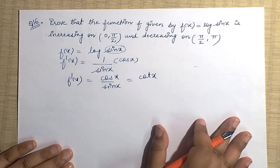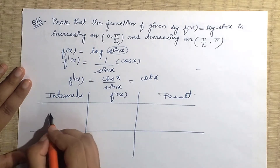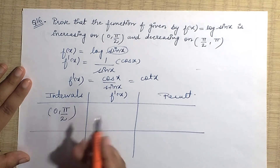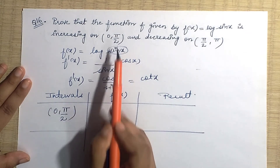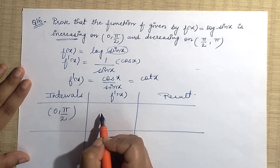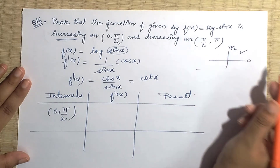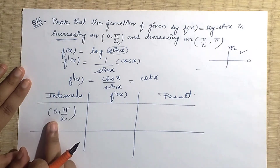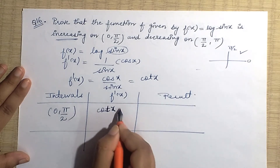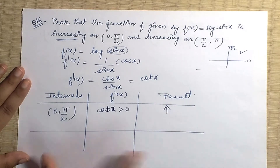So f'(x) = cot x. Now let's generate the intervals. The first interval is (0, π/2). In this interval, the function should be increasing. Any trigonometric function in the first quadrant is positive, so cot x is greater than zero here. That means the function is increasing — proved for this interval.